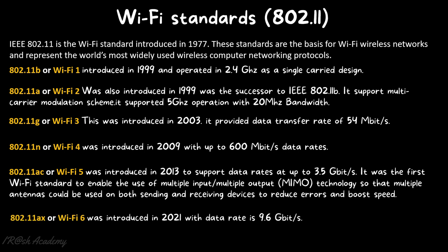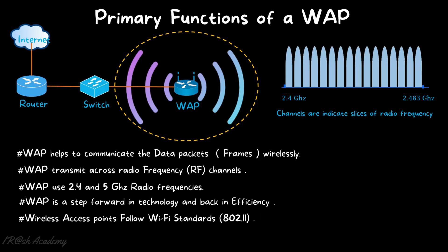Then 802.11ax or Wi-Fi 6, introduced in 2021, offers a data rate of 9.6 Gbps. This is the latest technology in use at this moment. Research and development is ongoing to introduce Wi-Fi 7, which is still under R&D status. Once tested and successful, we will get a new Wi-Fi standard called Wi-Fi 7. These are the different Wi-Fi standards used by wireless access points.